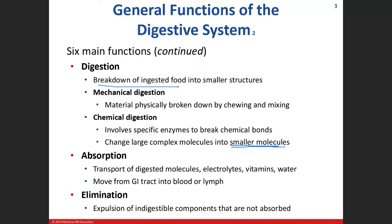Near the end of digestion, we've broken things down and made them small enough. Now we have to absorb them into the bloodstream so we can redistribute everything we've ingested — as long as it's considered a nutrient — throughout the body to the tissues that need it.